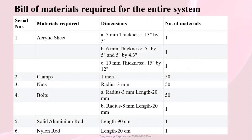The next slide shows the bill of materials for the entire system. Acrylic sheets are used in 5mm, 6mm, and 10mm thickness. Clamps are 1-inch dimensions; nuts have a radius of 3mm and bolts have radius 3mm with 20mm length and radius 8mm with 20mm length. The number of clamps, nuts, and bolts required is 50. A solid aluminum rod of 90cm length and an aluminum rod of 20cm length are also included.